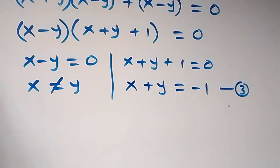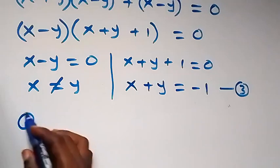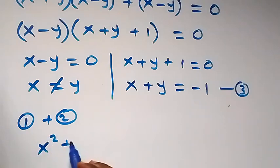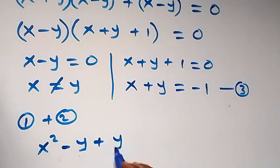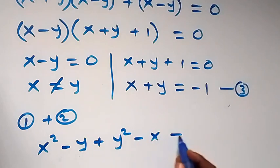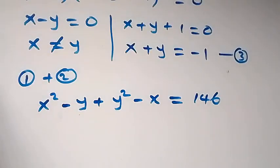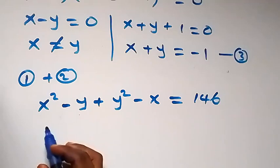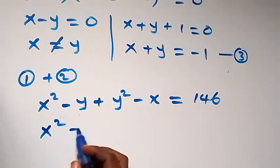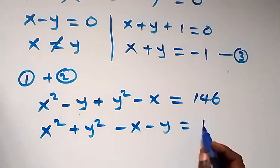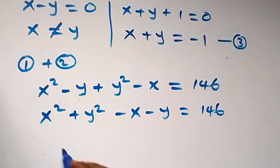Now let's add equation one and equation two. From equation one we have x squared minus y, plus equation two which is y squared minus x, equals 73 plus 73, giving us 146. We group the squares together to get x squared plus y squared, then minus x minus y, equals 146.